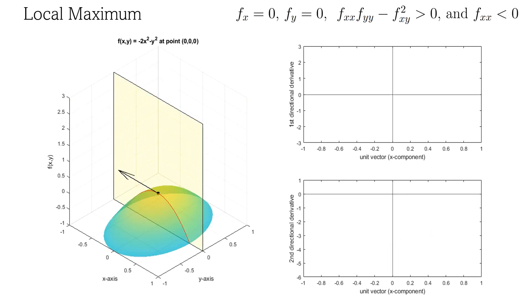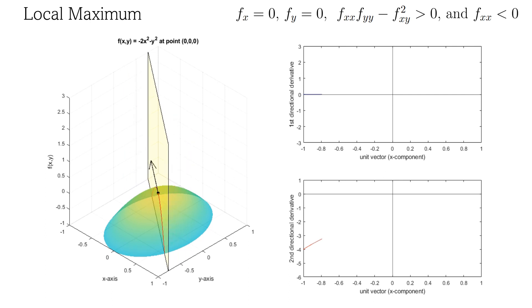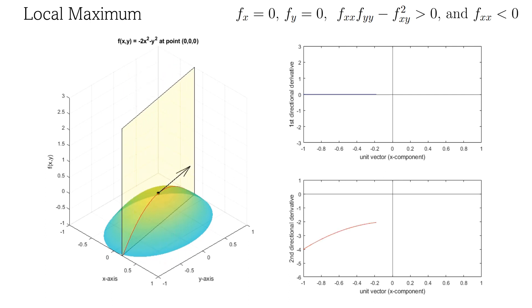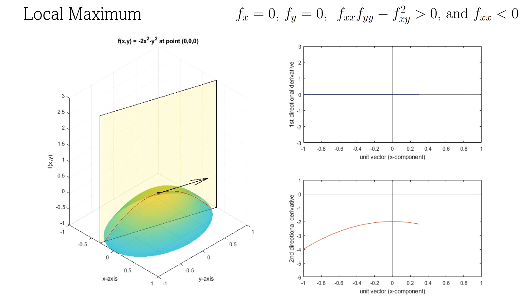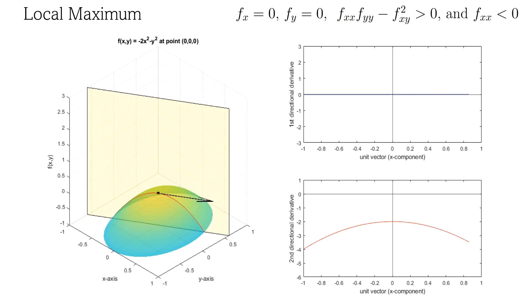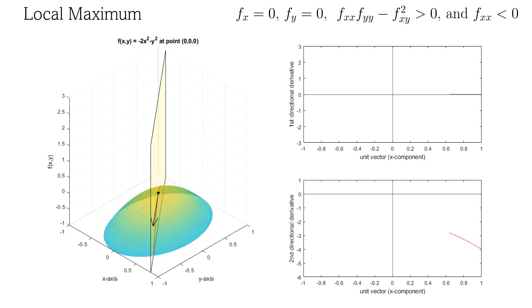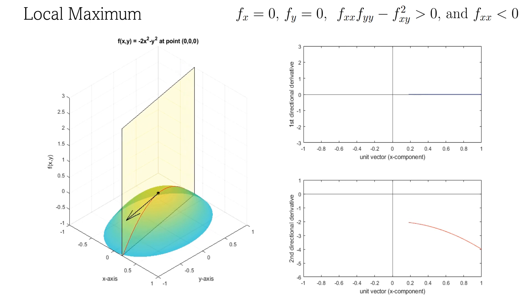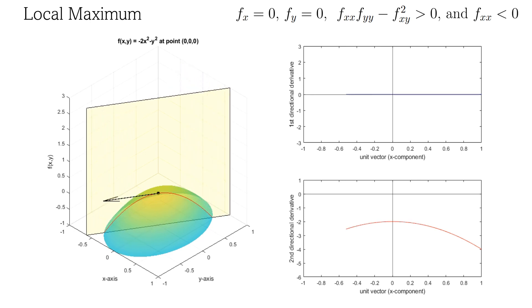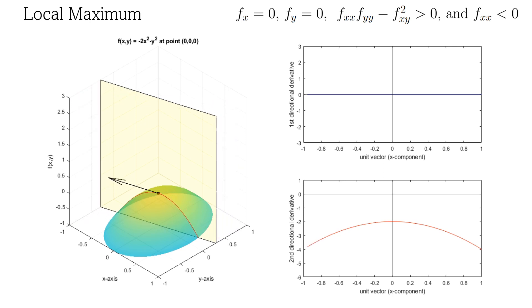For this critical point example, the second derivative test will result in a local maximum, because f sub xx times f sub yy minus f sub xy squared is greater than 0, and f sub xx is less than 0. The directional derivative is 0 in every possible direction, indicating we're at a critical point. Notice that the directional concavity plot is always negative, so this critical point is a maximum. Once again, the directional concavity never crosses the x-axis, because the discriminant is negative. Thus, no real roots exist.